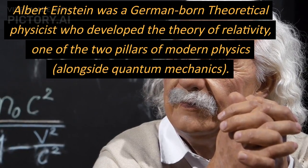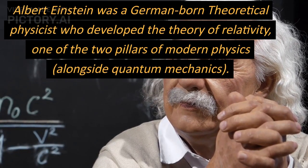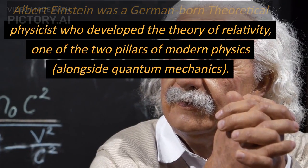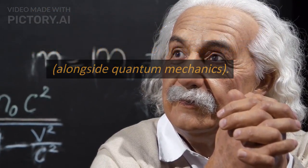Albert Einstein was a German-born theoretical physicist who developed the theory of relativity, one of the two pillars of modern physics, alongside quantum mechanics.